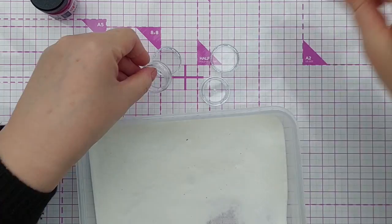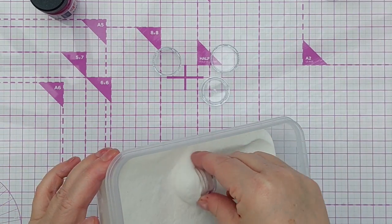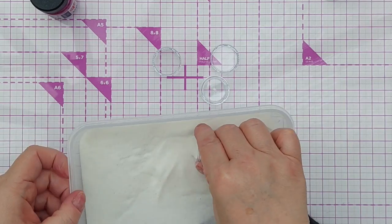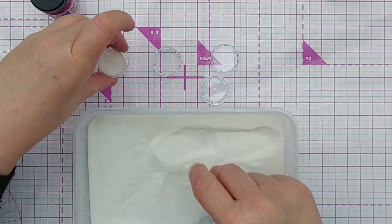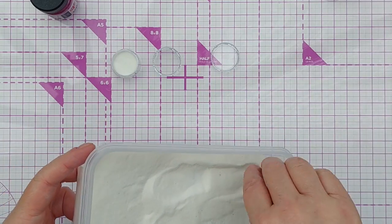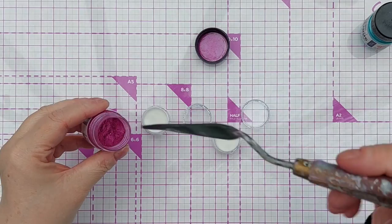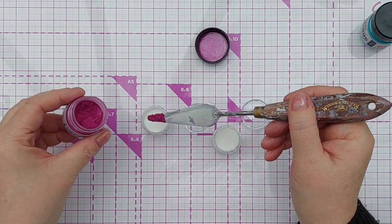I'm going to pop loads of clear embossing powder in. It's not full but it's on its way, and then I'm going to take a dollop of pigment powder and add that.